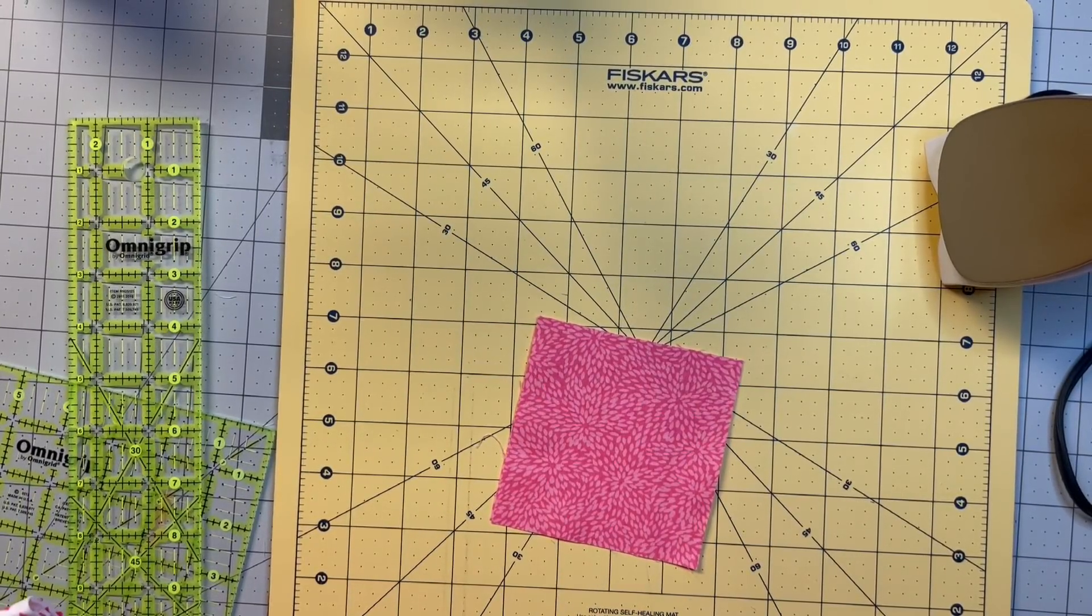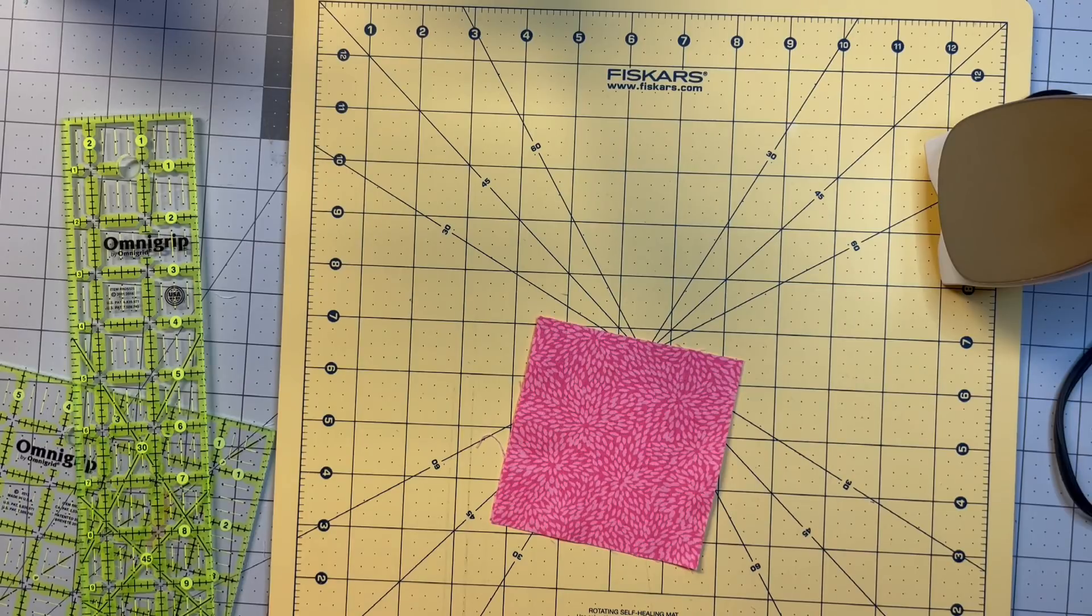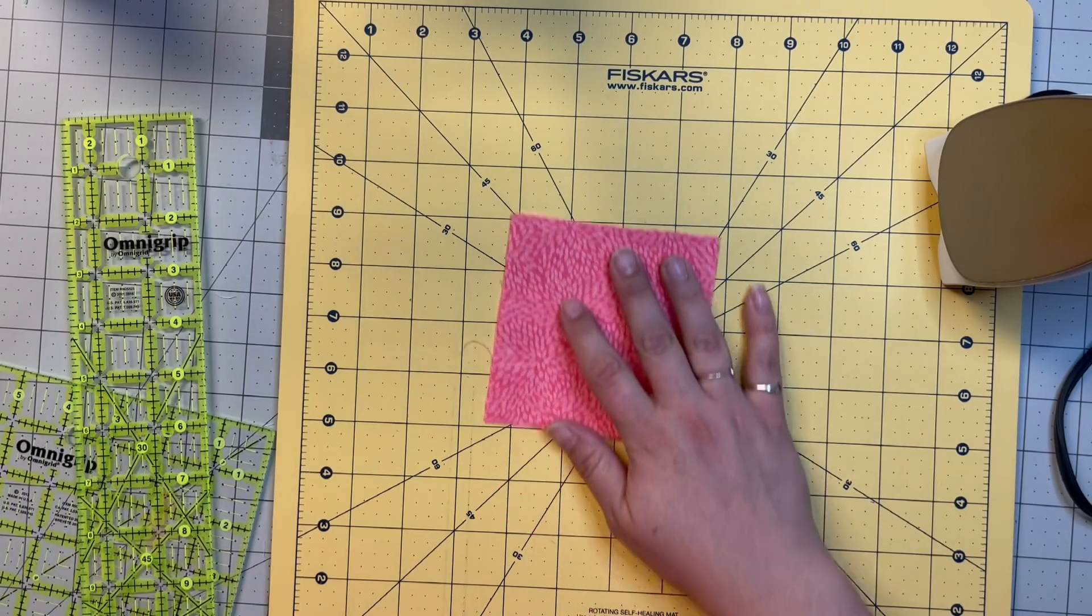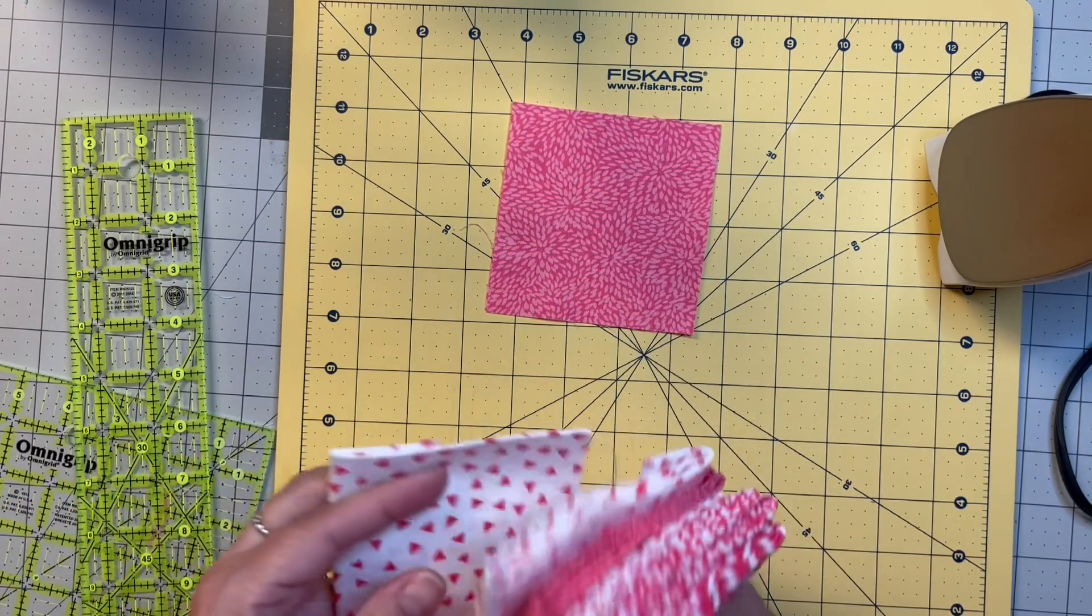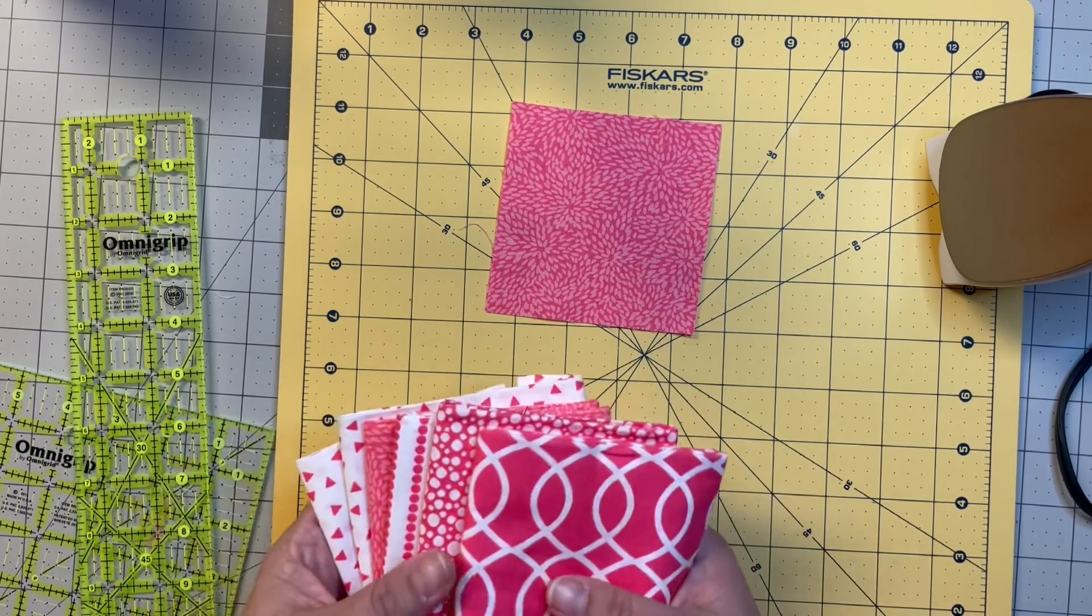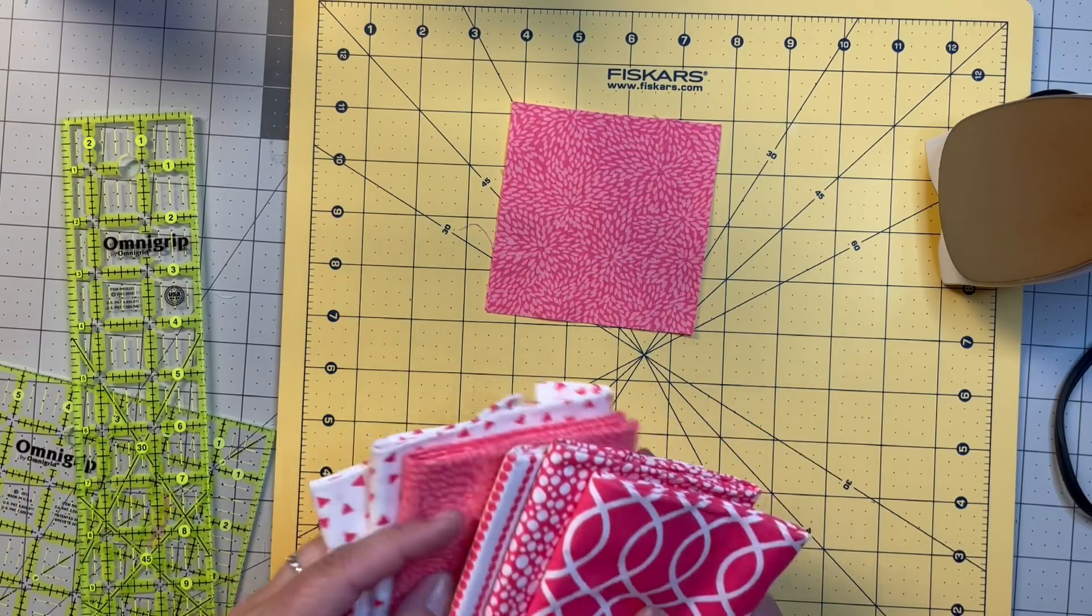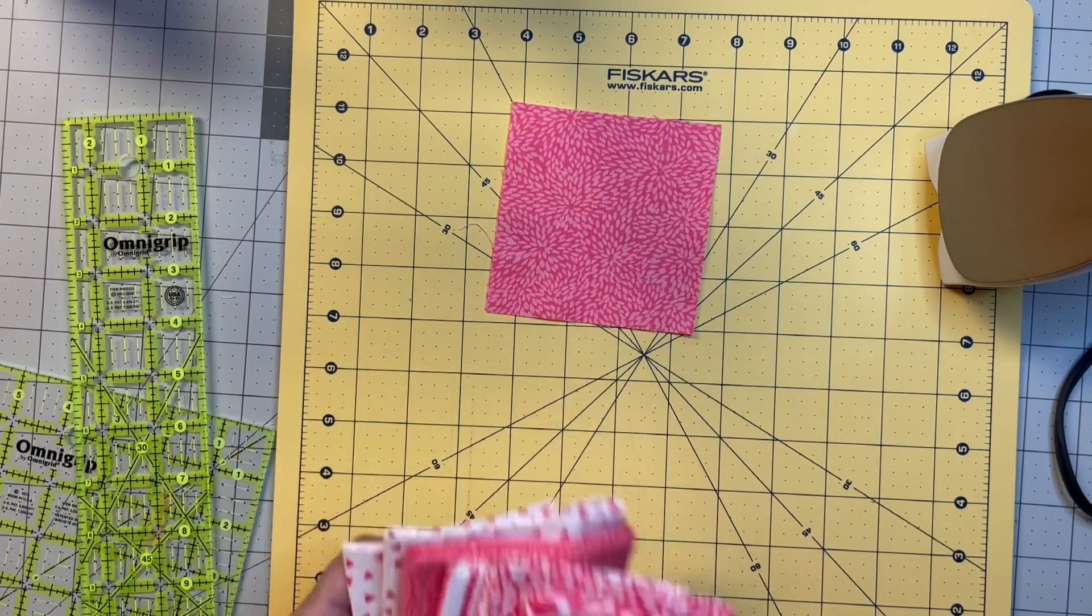Hello, welcome back to my channel. Today we're going to make a block that is called Aunt. For that I chose this fabric—it's a fat quarter bundle from Walmart—and I chose these two for this block.